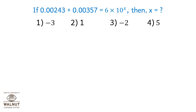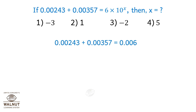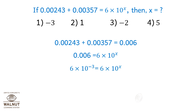If 0.00243 plus 0.00357 equals 6 multiplied by 10 raised to x, then x equals? Therefore, 0.00243 plus 0.00357 equals 0.006. So 0.006 equals 6 multiplied by 10 raised to x. Since 6 multiplied by 10 raised to minus 3 equals 6 multiplied by 10 raised to x, therefore x equals minus 3.